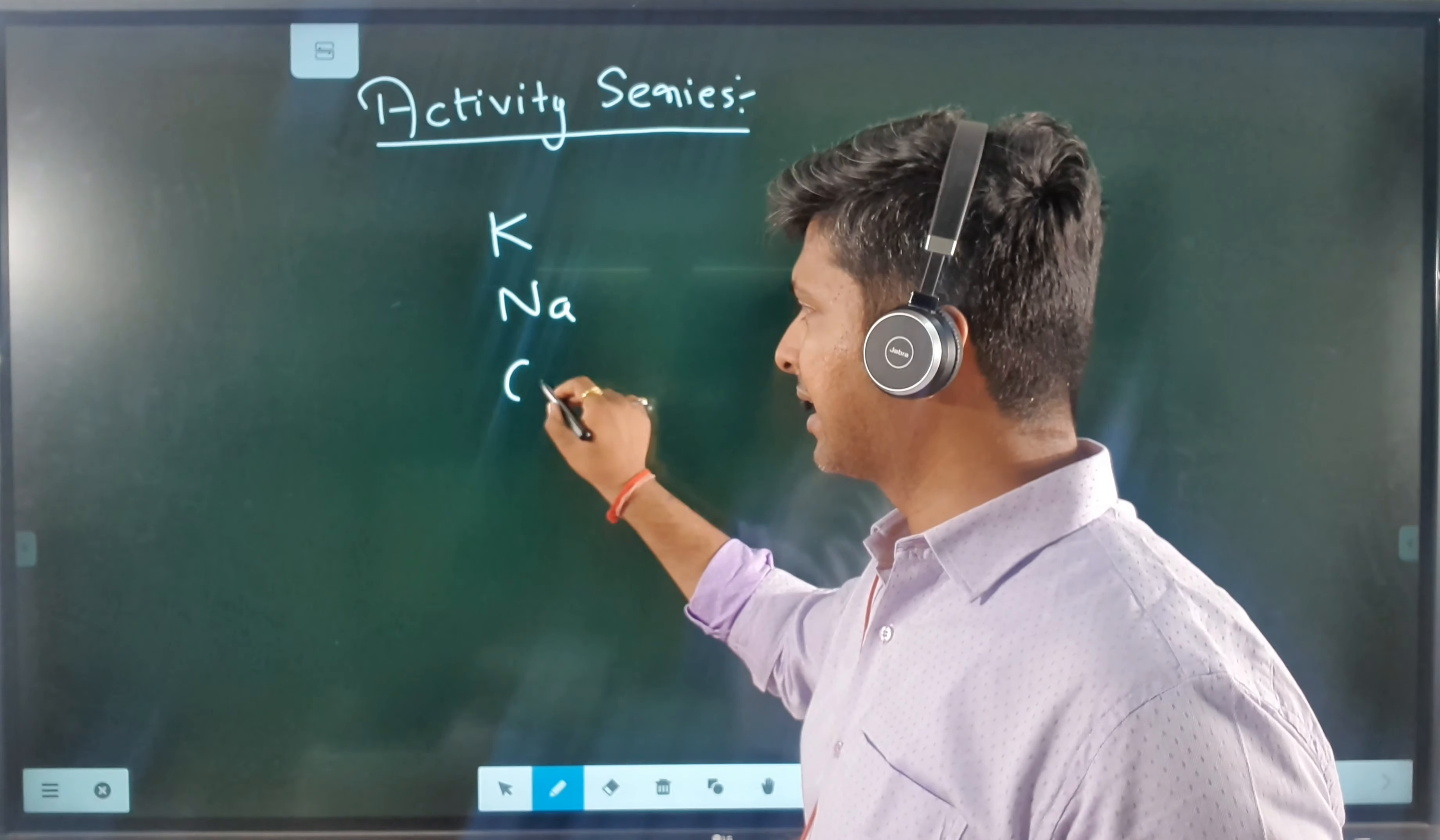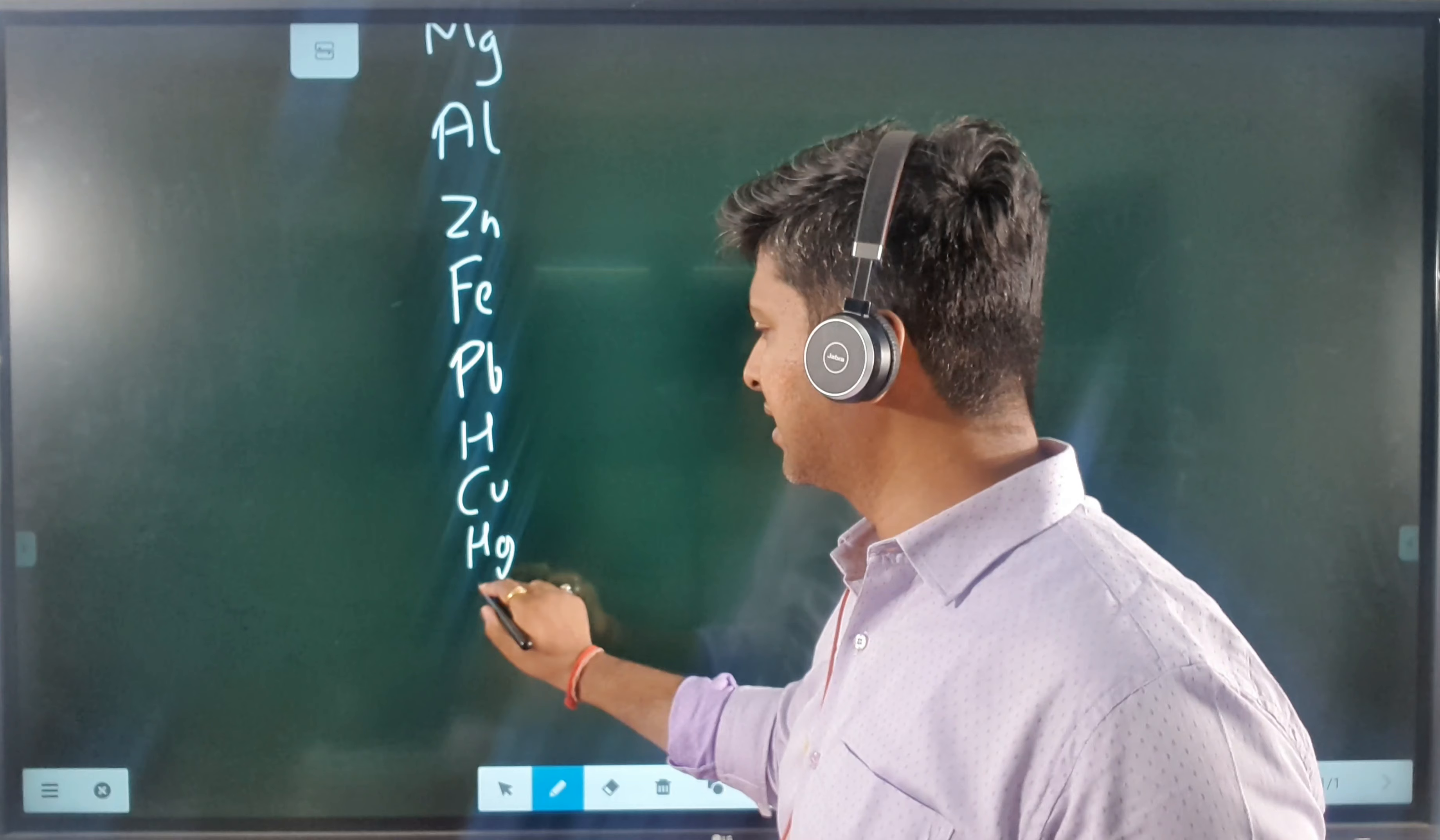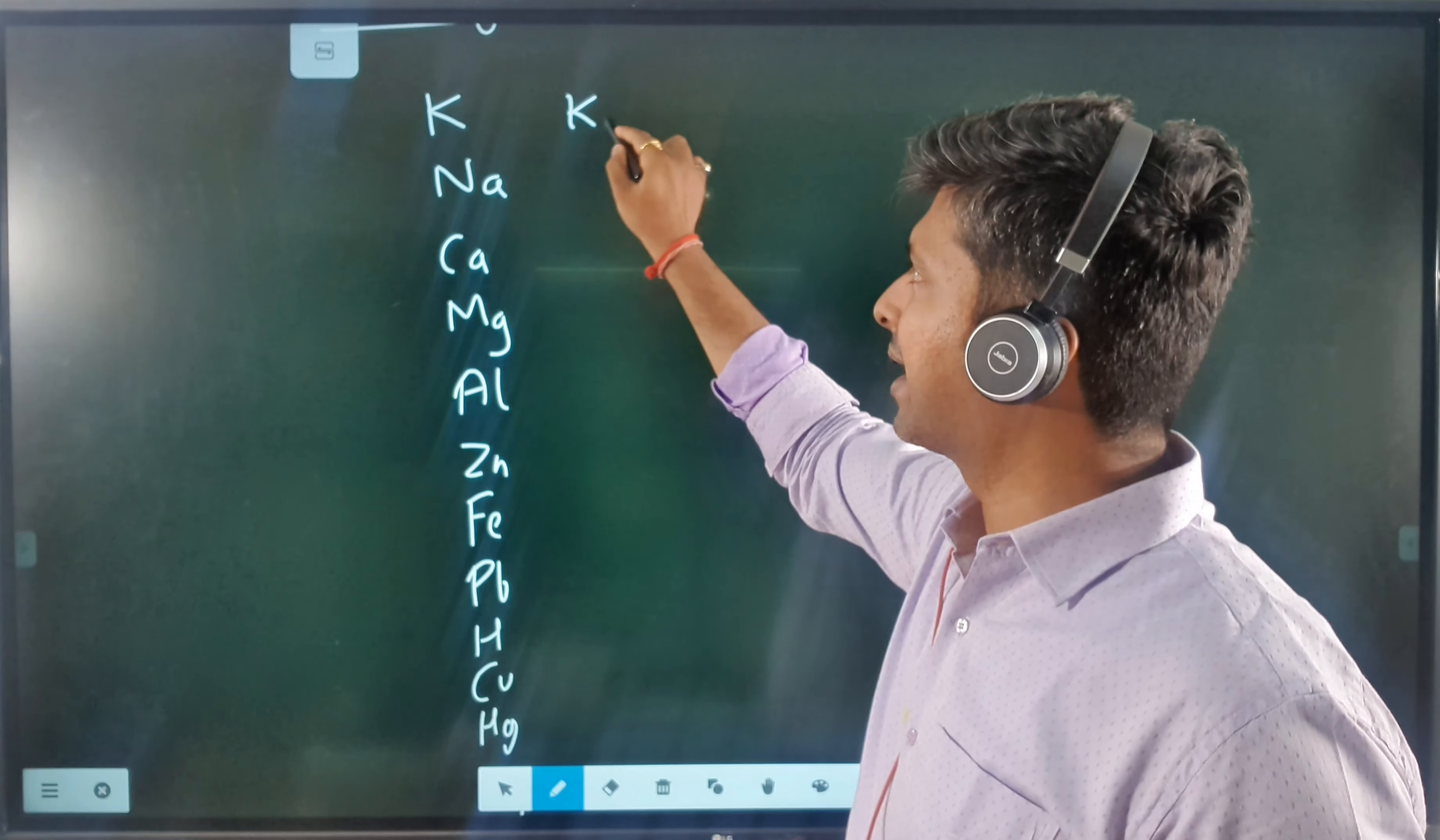Now how to memorize this activity series? A small mnemonic just to help you remember the activity series. It says that Kabir ne Canada mein apne zinda dil friend Parab ko hundred carrot here a silver gold or platinum dia.